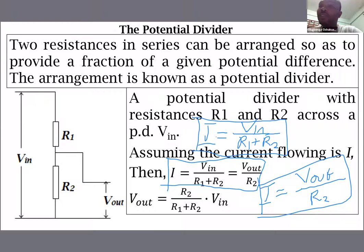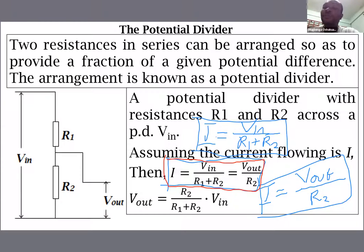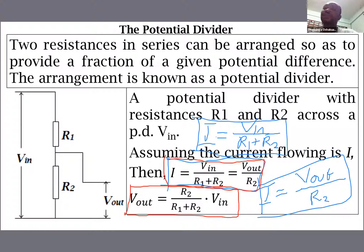From these two expressions — both equal to I — we can make V-out the subject of the formula and get: V-out = (R2 / (R1 + R2)) × V-in.